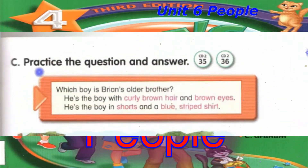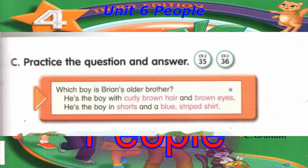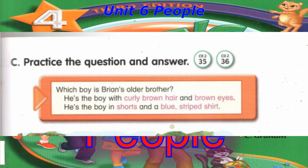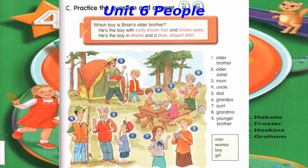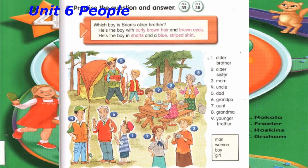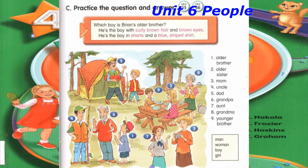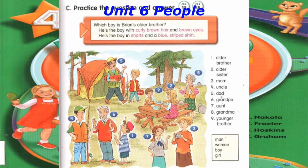Track 35, C. Practice the question and answer. Which boy is Brian's older brother? He's the boy with curly brown hair and brown eyes. He's the boy in shorts and a blue striped shirt.